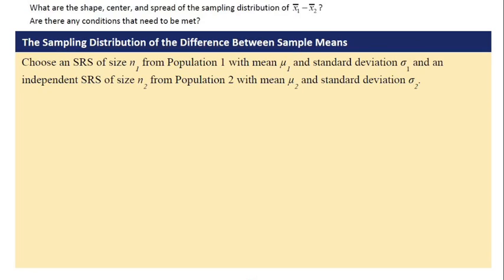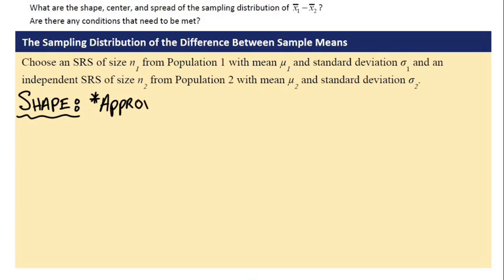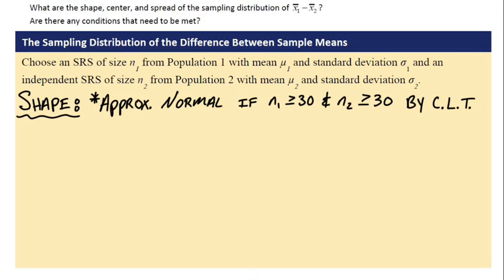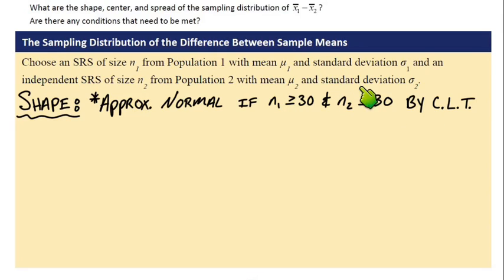What are the shape, center, and spread of the sampling distribution, and are there any conditions? In the box titled the sampling distribution of the difference between sample means, x bar 1 minus x bar 2, it starts out giving the characteristics about the first and second populations. The shape — if you look at the illustration, hopefully it's about normal. We can say approximately normal if both sample sizes are bigger than 30. That's by the central limit theorem, CLT. That's the condition that goes with normality.